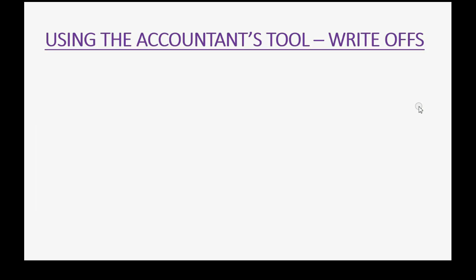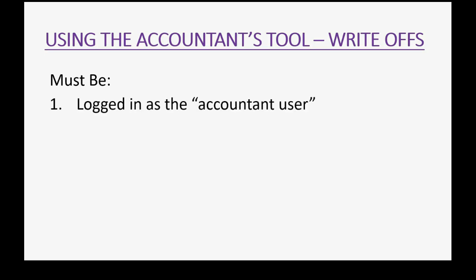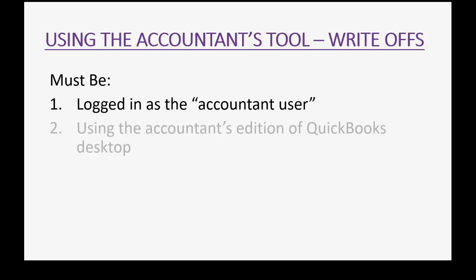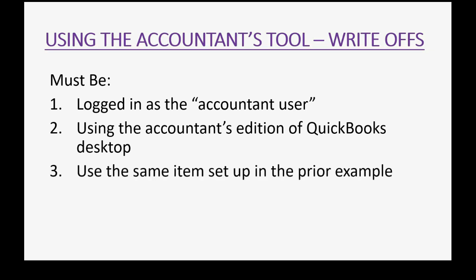If you were writing off many uncollectible customers, it might save you time to use the accountant's tool for write-offs, which is called the Client Data Review, instead of making a credit memo for each one. But in order to use this tool, you must be logged in as the accountant user or using the accountant's edition of QuickBooks Desktop. It uses the same item set up in the prior example — you still have to create the bad debt expense account and the other charge item before using the accountant's tool.